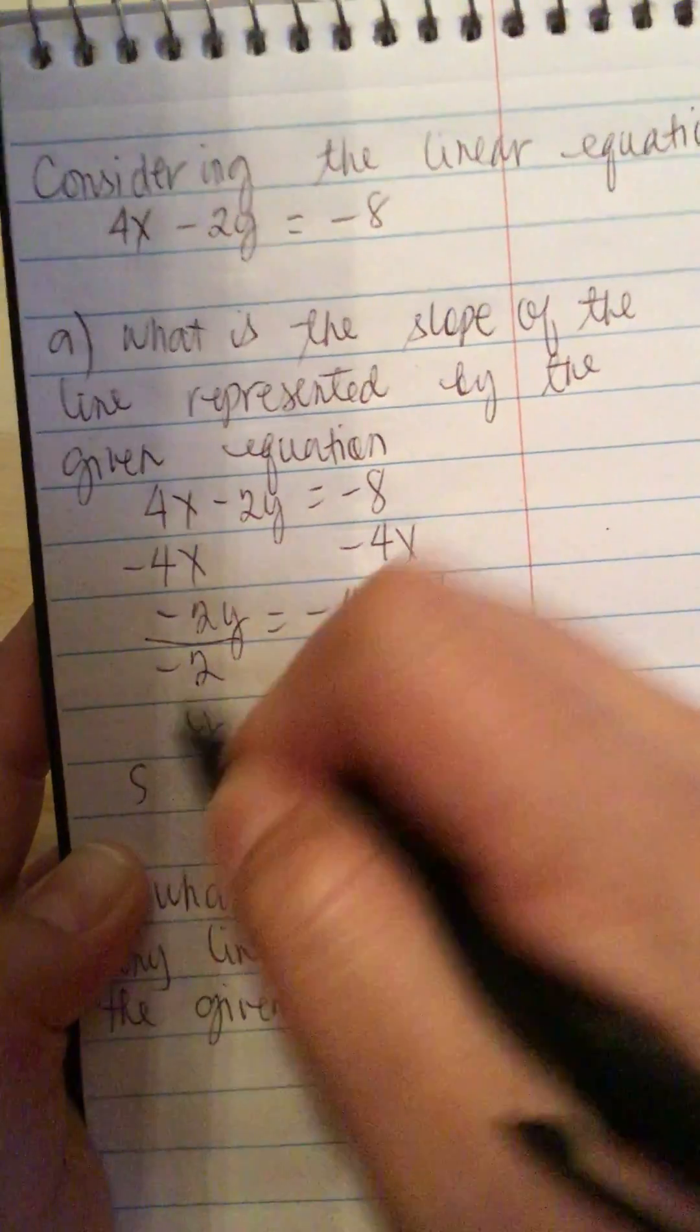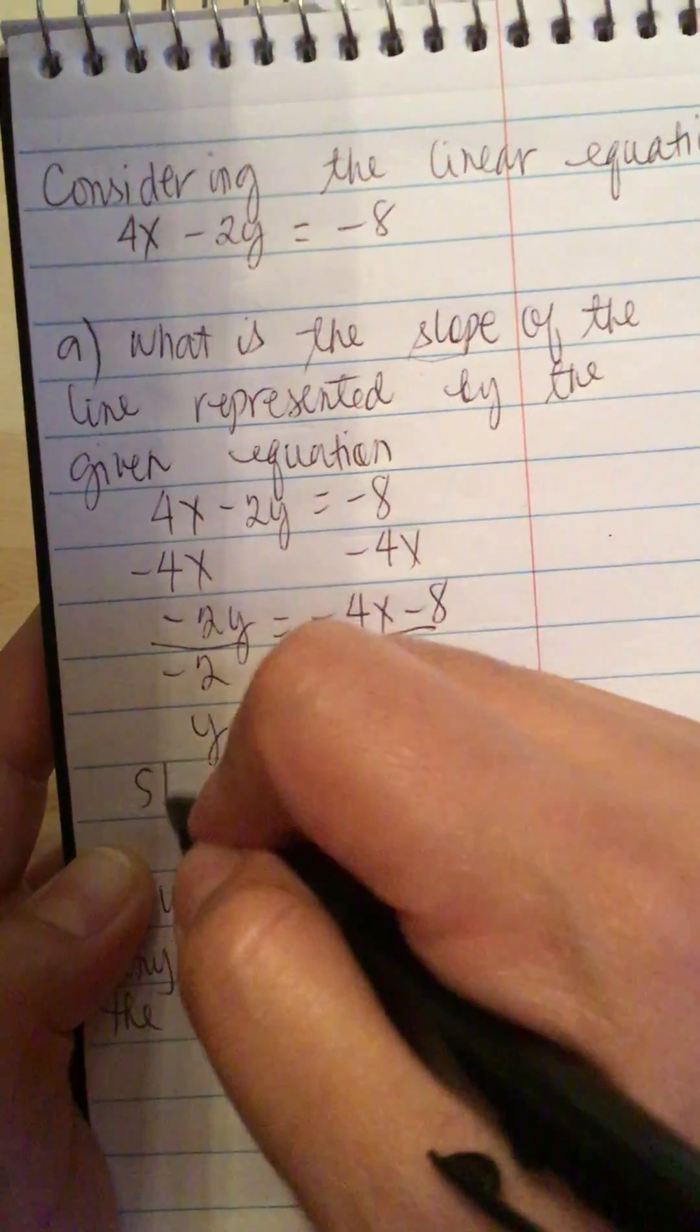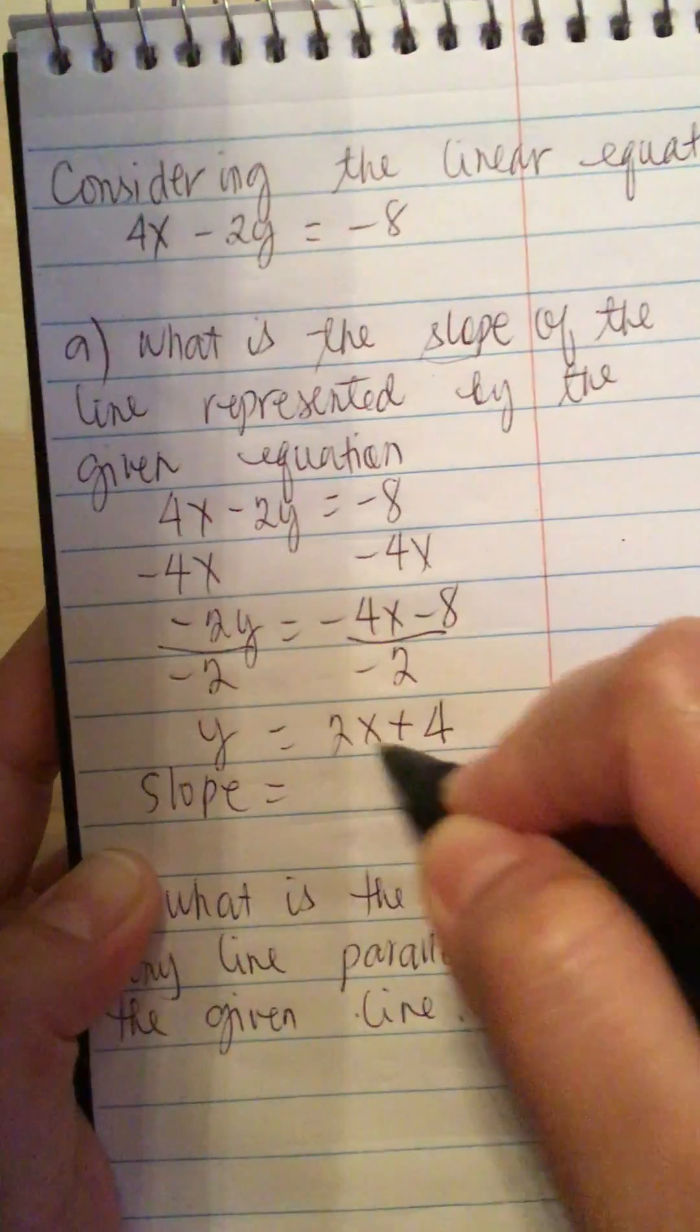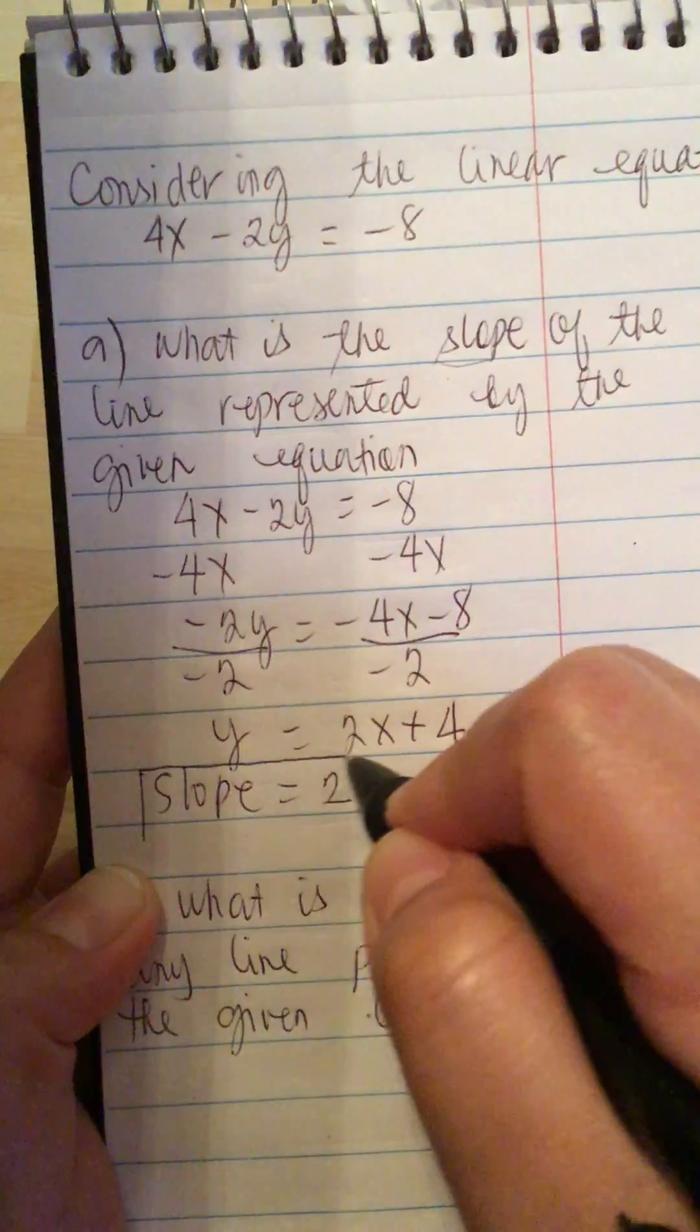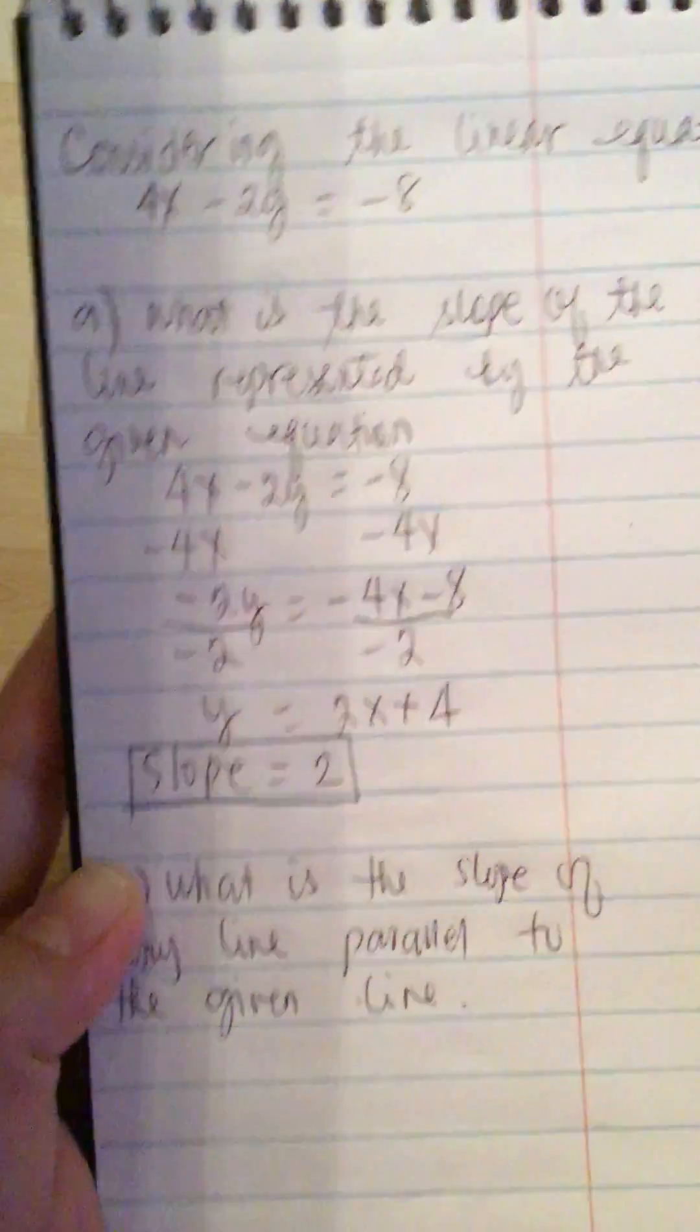So now the slope, the s for slope. Slope is equal to the number before x, so it is 2. So this is the answer.